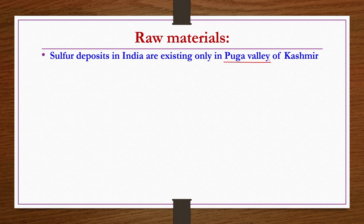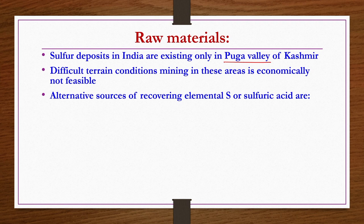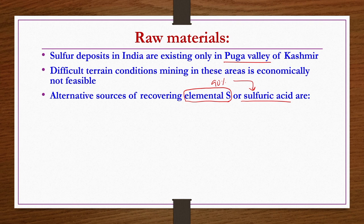Regarding availability of raw materials for production of elemental sulfur in India: sulfur deposits exist only in Puga Valley of Kashmir, but terrain conditions are very difficult there, making mining of elemental sulfur economically not feasible. Therefore, alternative sources for recovering elemental sulfur or sulfuric acid must be found. Since 90% of elemental sulfur is used for sulfuric acid production, directly recovering sulfuric acid as a byproduct from other processes is even better.